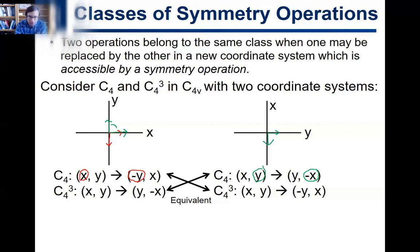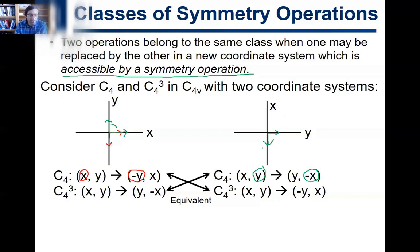So these two symmetry operations give the same results if you just change the Cartesian coordinate system. That satisfies the first part of the definition — one may be replaced by the other in a new coordinate system. But the new coordinate system also has to be accessible by a symmetry operation in the point group.